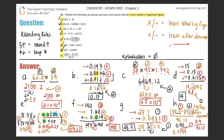Now divide 0.9 by 45.13. That gives 0.0199. This is division, so take the lowest total sig figs. 0.9 has one sig fig; 45.13 has four. So the answer should have one sig fig total. The digit 9 is greater than five, so round the 1 up to 2. The final answer for h is 0.02.